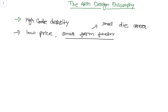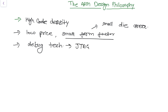Apart from this, the ARM microcontroller also has in-circuit debug technology. With this debug technology, which is connected with JTAG — Joint Test Action Group — the developer can look inside the processor.